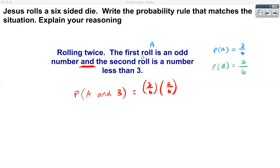We looked at a couple of different situations, all centered around a six-sided die, and we figured out how to write the probability rules that matched each of those situations.